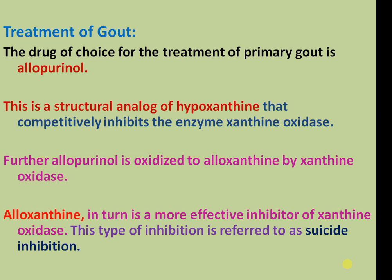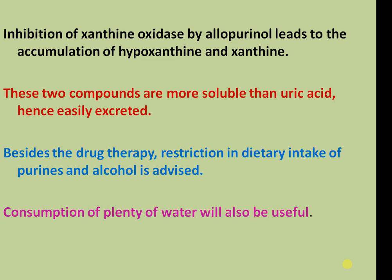Treatment of primary gout: Allopurinol is a structural analog of hypoxanthine that competitively inhibits xanthine oxidase. Allopurinol is itself oxidized to alloxanthine by xanthine oxidase, and alloxanthine acts as an associated inhibitor of the enzyme. Through inhibition of xanthine oxidase, the more soluble xanthine and hypoxanthine accumulate and are more easily excreted. Besides drug therapy, restriction in dietary intake of purines and alcohol, and consumption of plenty of water, are also useful.